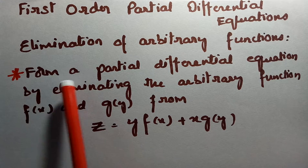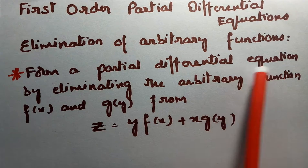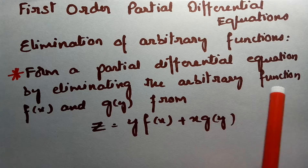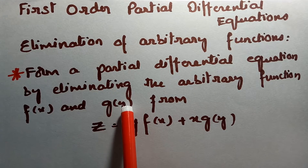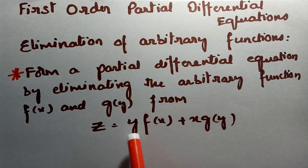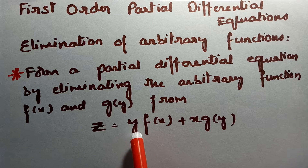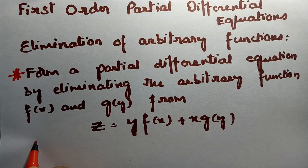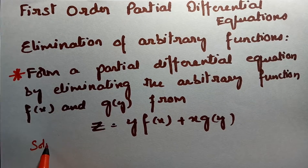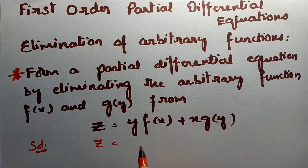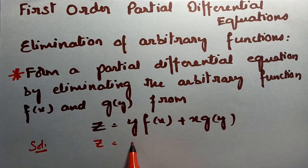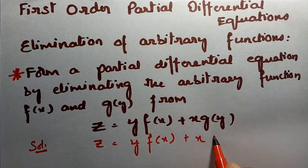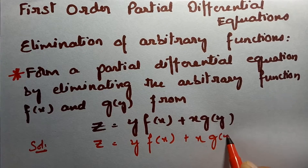We have to form a partial differential equation by eliminating the arbitrary functions. We have to eliminate the functions f(x) and g(y) from the equation z = y·f(x) + x·g(y). Here is the solution. What is the equation given? z is equal to y·f(x) plus x·g(y).